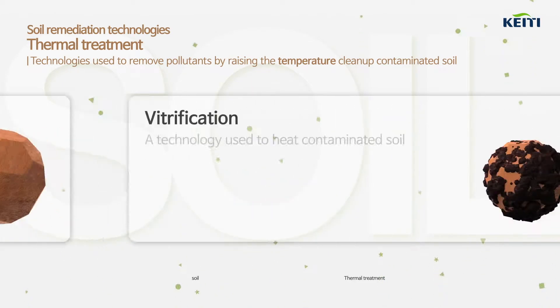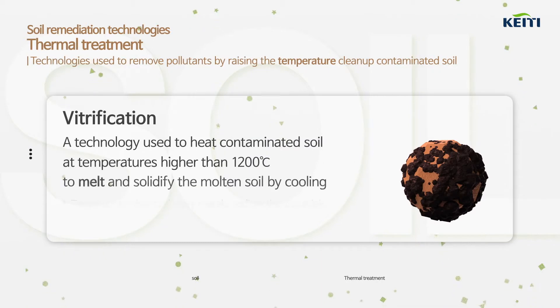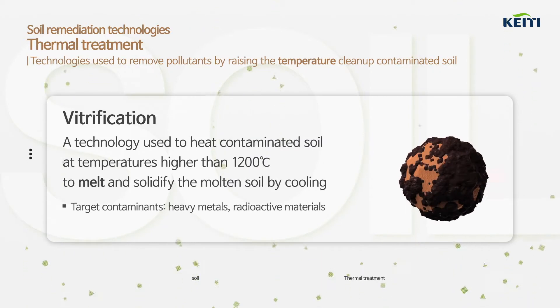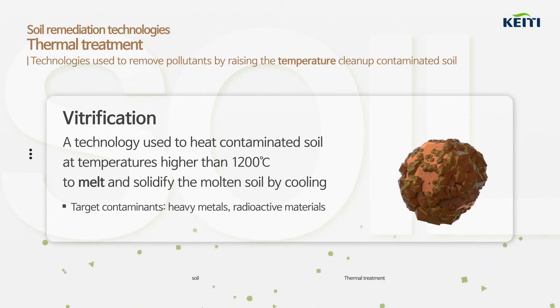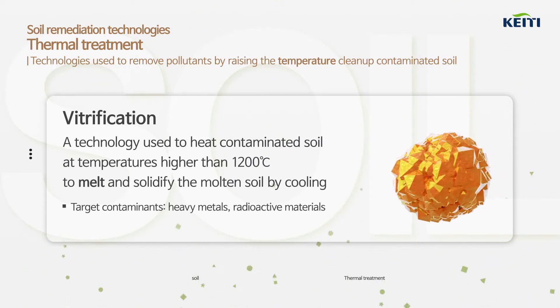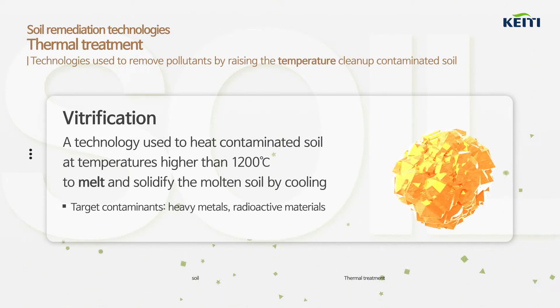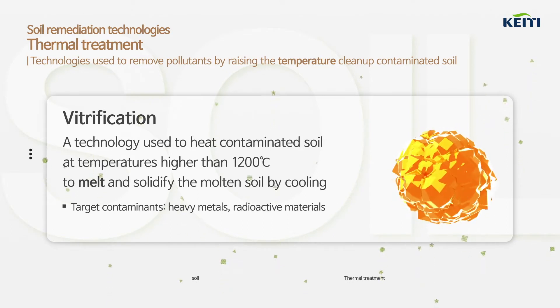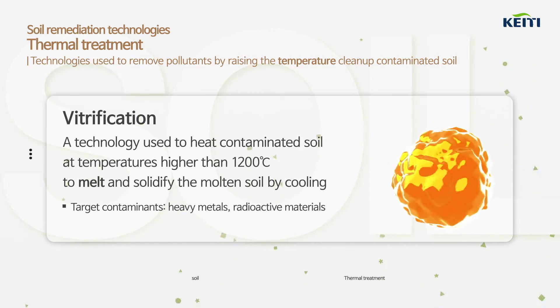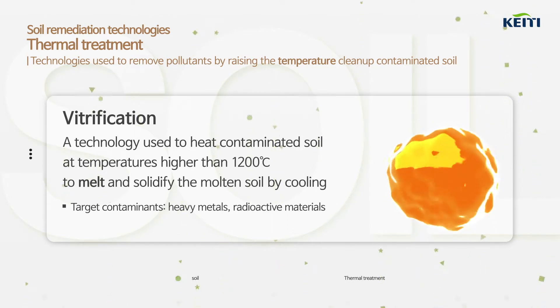The vitrification technique applies heat to contaminated soil at temperatures higher than 1200 degrees Celsius to melt and solidify the molten soil by cooling.